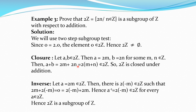The next step is the closure property: for a, b belonging to 2Z, a+b must again be in 2Z. To prove closure, take two elements a and b from 2Z. Every element of 2Z is a multiple of 2, so write a = 2m and b = 2n for some m, n ∈ Z. Then a+b = 2m+2n = 2(m+n). Since m and n are integers, m+n is again an integer, so 2(m+n) is in 2Z. Thus 2Z is closed under addition.